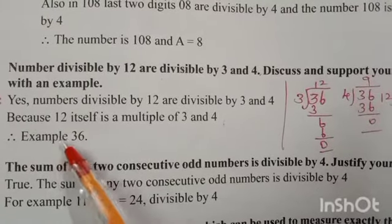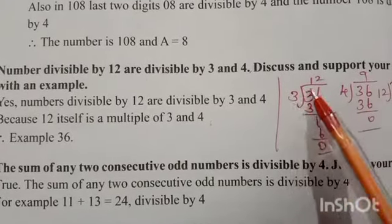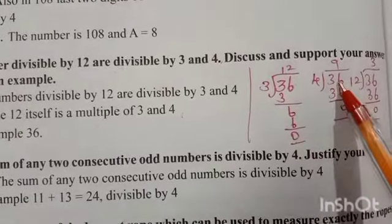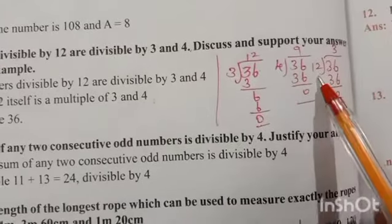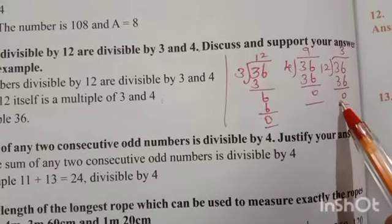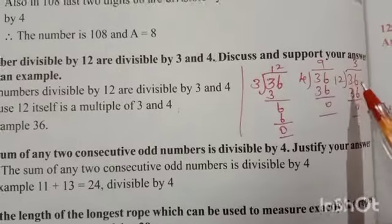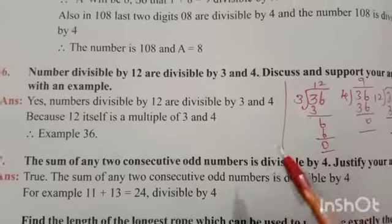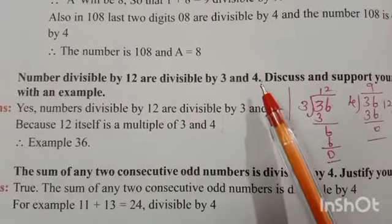For example, consider 36. This 36 is divisible by 3 — we get remainder 0. 36 divided by 4 also gives remainder 0, so it is divisible by 4. 36 divided by 12 gives remainder 0, so 36 is exactly divisible by 12, 4, and 3. So it is true that a number divisible by 12 is also divisible by 3 and 4.